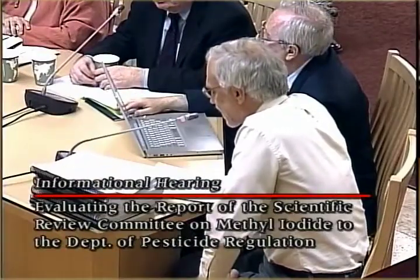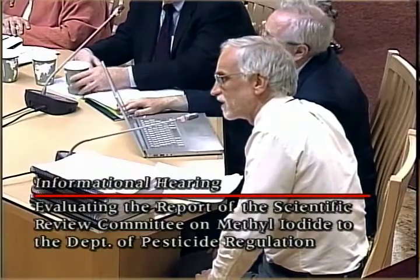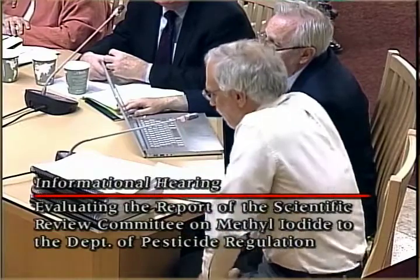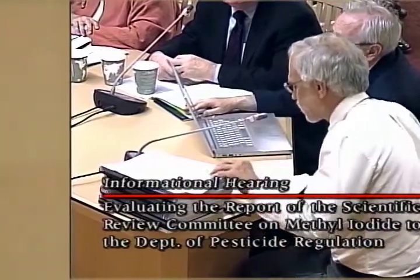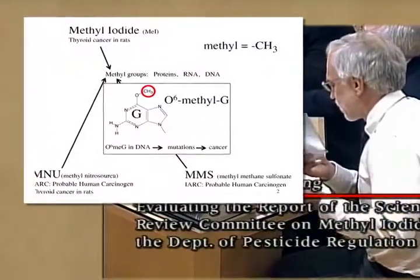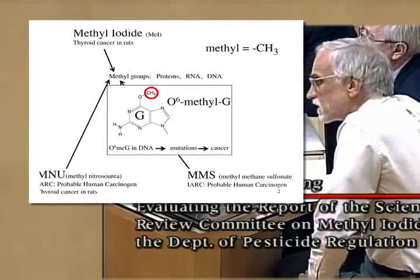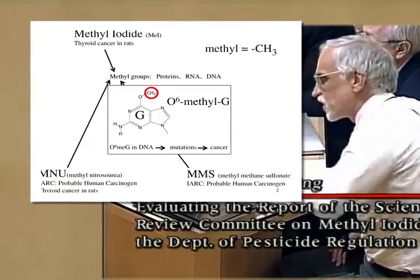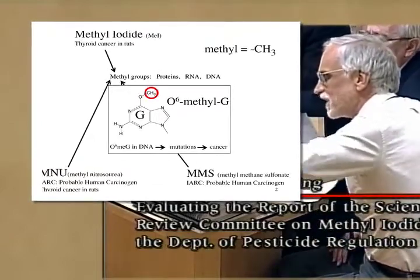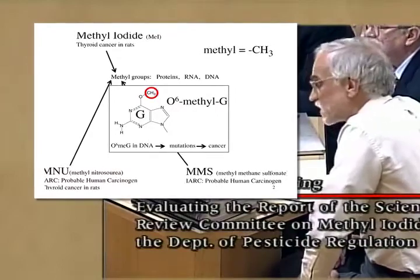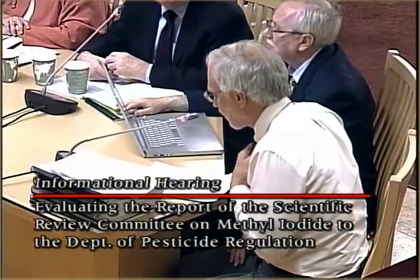There's a whole class of compounds that do this. They include methyl nitrosaurea and methylmethanesulfonate. Inside cells, these compounds put methyl groups on proteins, RNA, DNA — everything. But putting methyl groups onto DNA is particularly unfortunate. And now I'm up to slide number two, because it causes mutations in cancer. The mechanism is not a mystery. It's well understood. The crucial site is this oxygen on the base guanine. This modification leads to mutations in cancer because the methyl group causes mistakes when DNA is copied as cells are dividing.